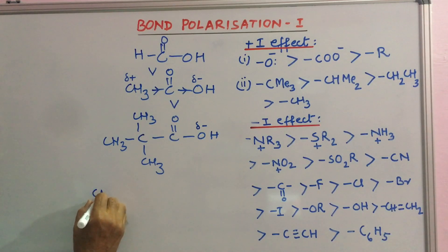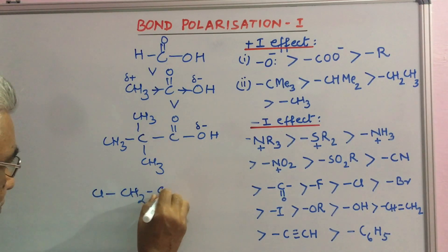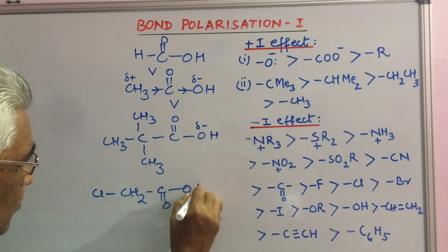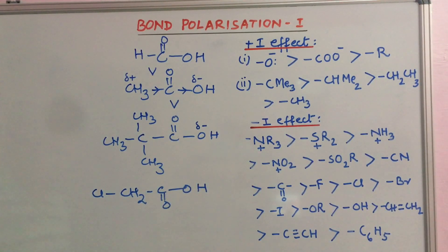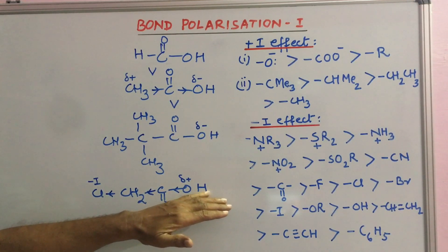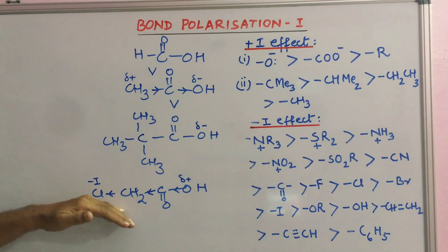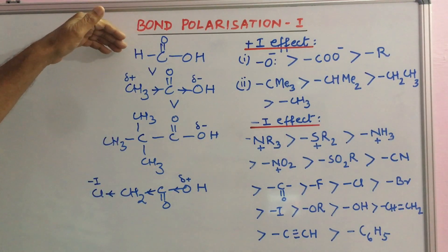Similarly, if you put chloroacetic acid. Chlorine has a minus I effect, a strong minus I effect. This travels and creates delta positive charge on it. So this actually helps in retaining the burden of this electron pair which is there by loss of proton. So proton will be lost easily. Chloroacetic acid is therefore a stronger acid even than formic acid.